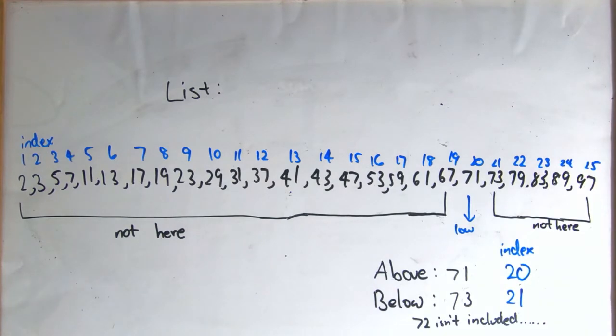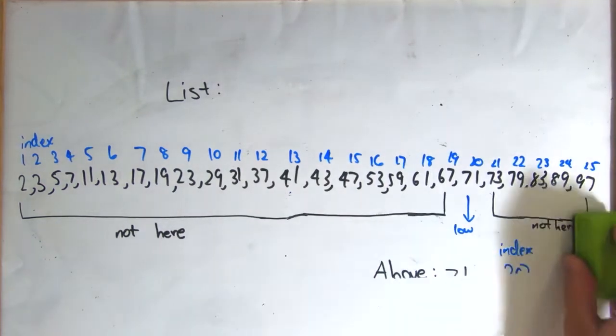Now, this is a much more efficient algorithm than just looking at the 25 numbers one by one, or looking at the five rows and columns, because you only have to look at five numbers in the worst case scenario, at which point you will be able to determine whether your number is in the list or not.